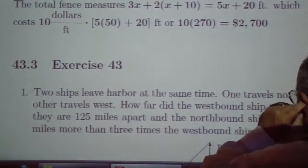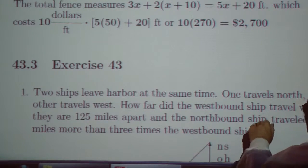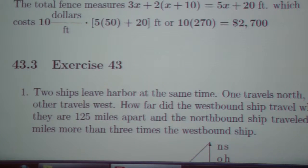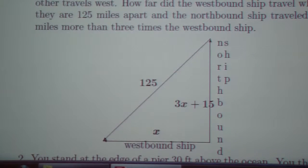Exercises. Two ships leave harbor at the same time. One travels north, the other travels west. How far did the westbound ship travel when they are 125 miles apart and the northbound ship traveled 15 miles more than three times the westbound ship?